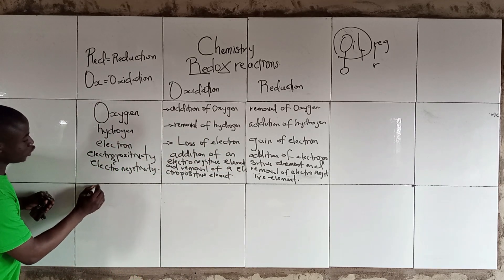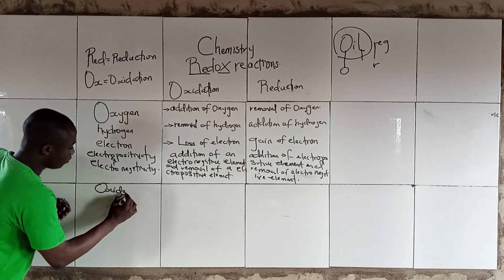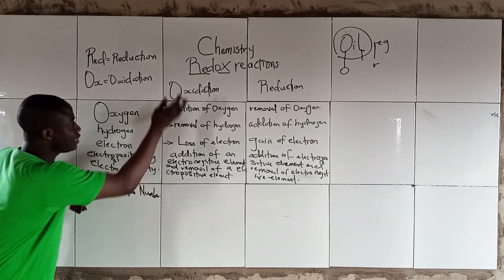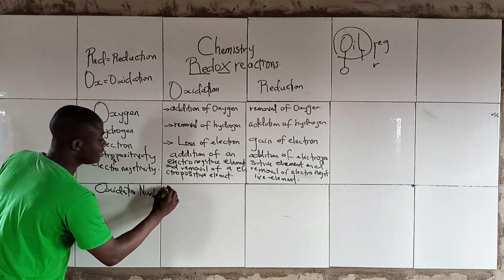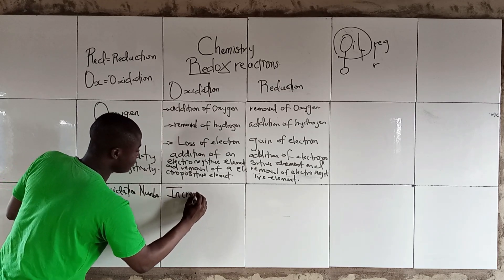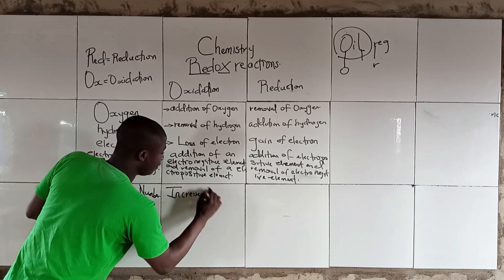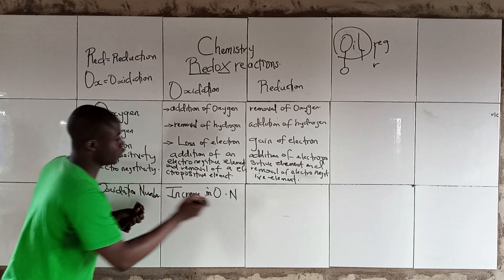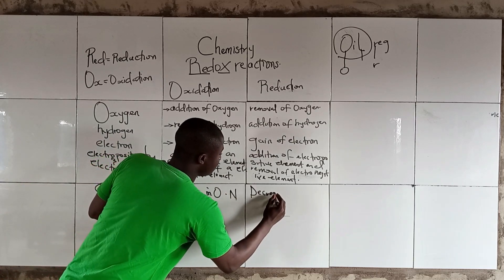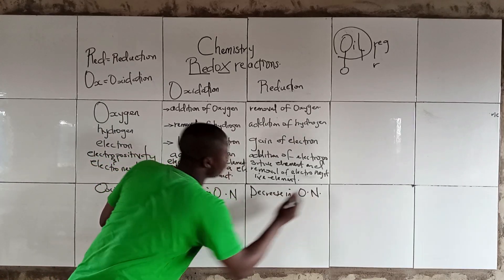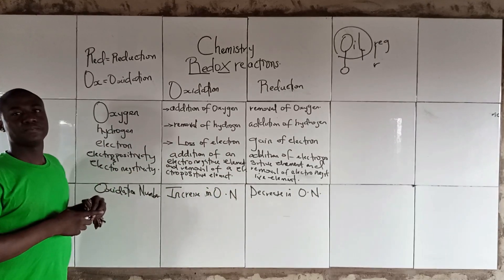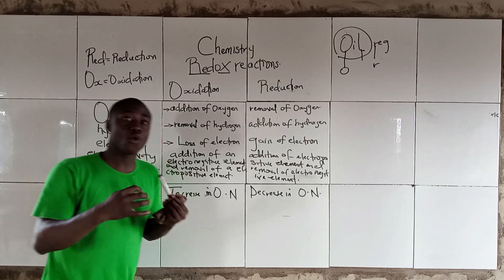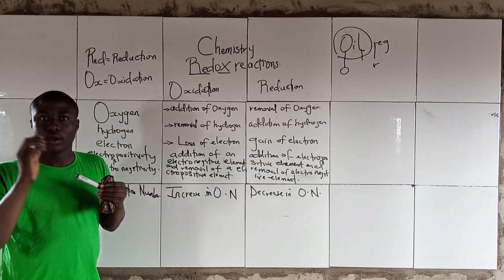Based on oxidation number, oxidation simply means an increase in oxidation number, while reduction means a decrease in oxidation number. Now, in today's lesson, I shall be focusing on oxidation number.